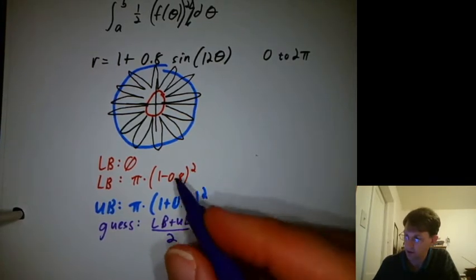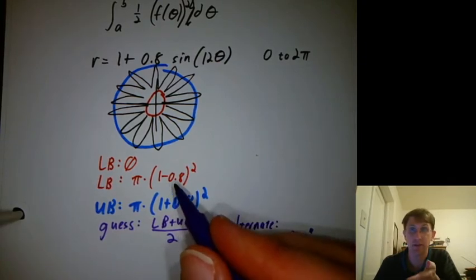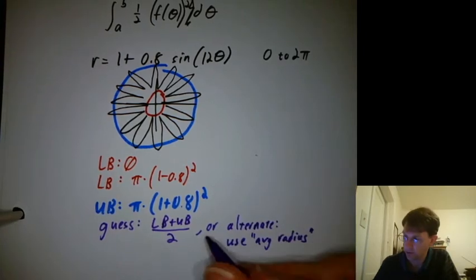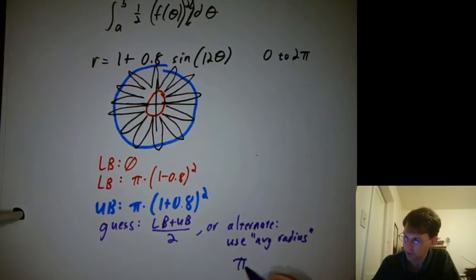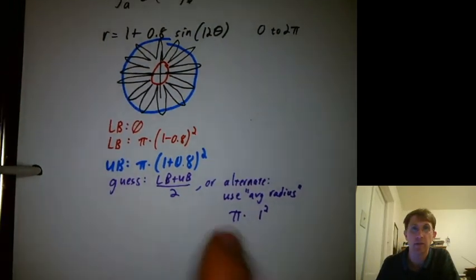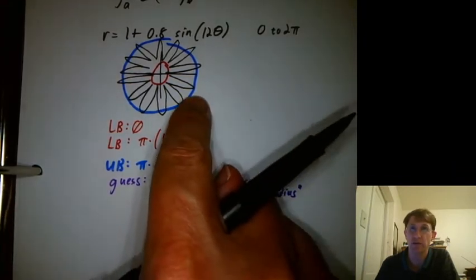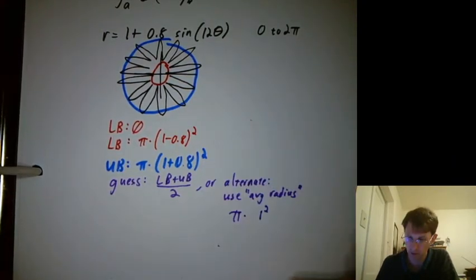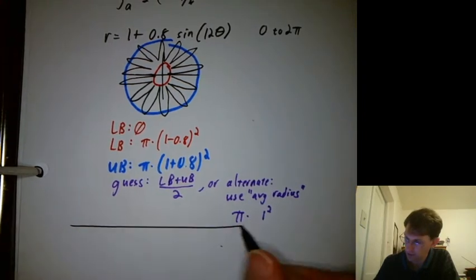I'm just saying the average radius here looks like it's 1 because it's down to 1 minus 0.8, up to 1 plus 0.8. So pi times an average radius of 1 squared. So I think that's a good way to do a bound too. It's an interesting question. Can we say systematically which one of those is better for flowers shaped like this? Maybe we'll let that be an extension problem. All right. Let's actually do the integral.